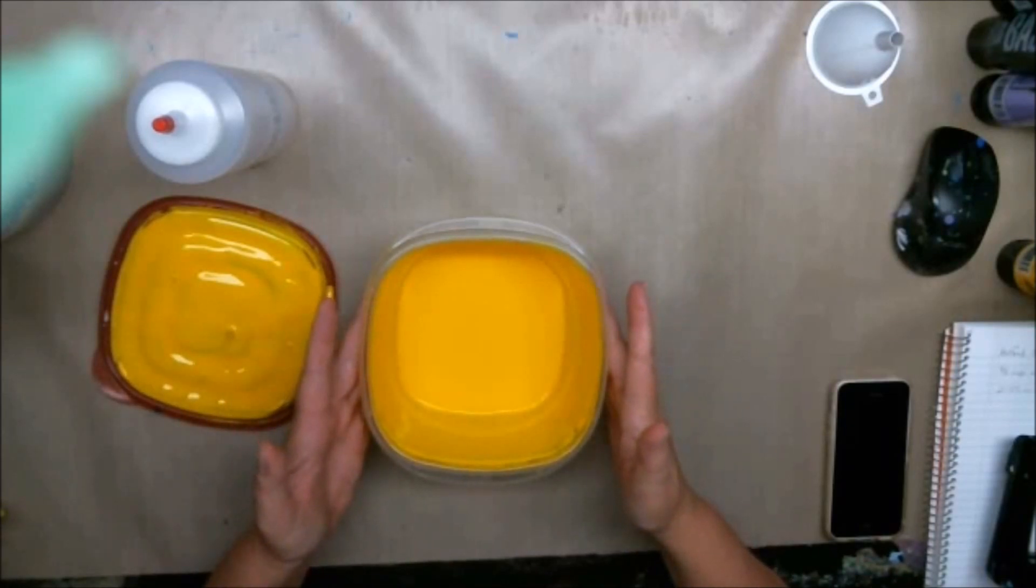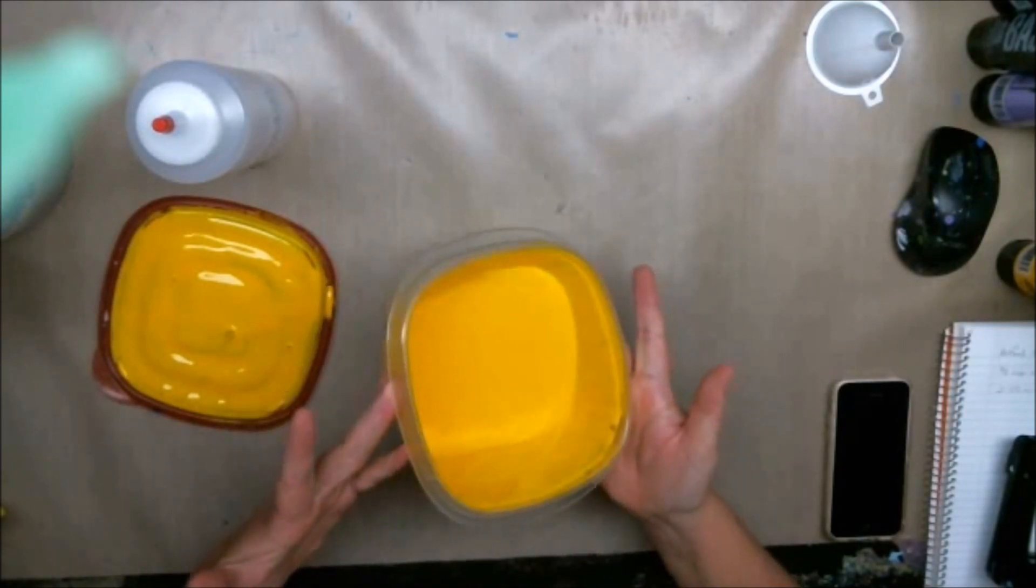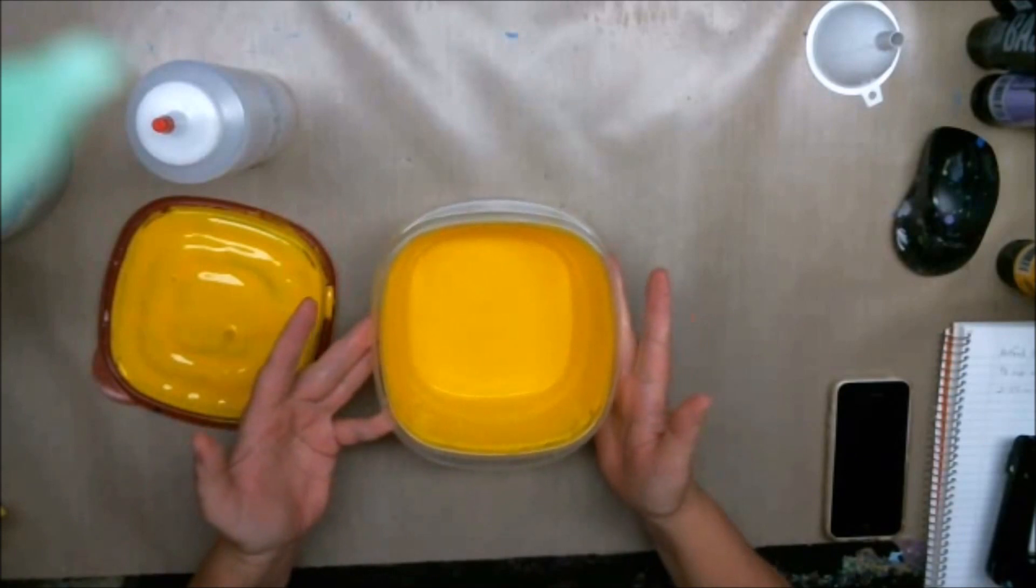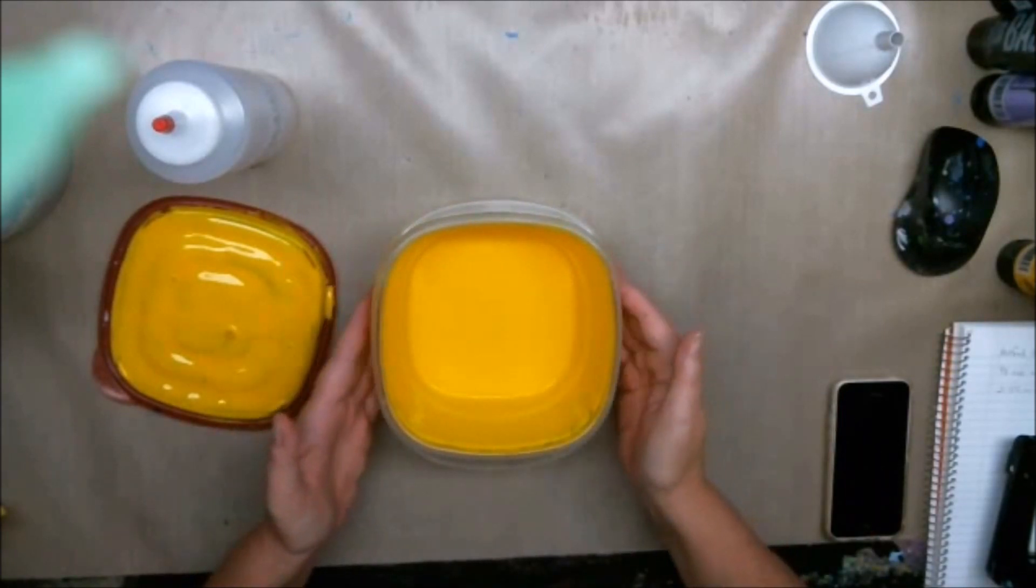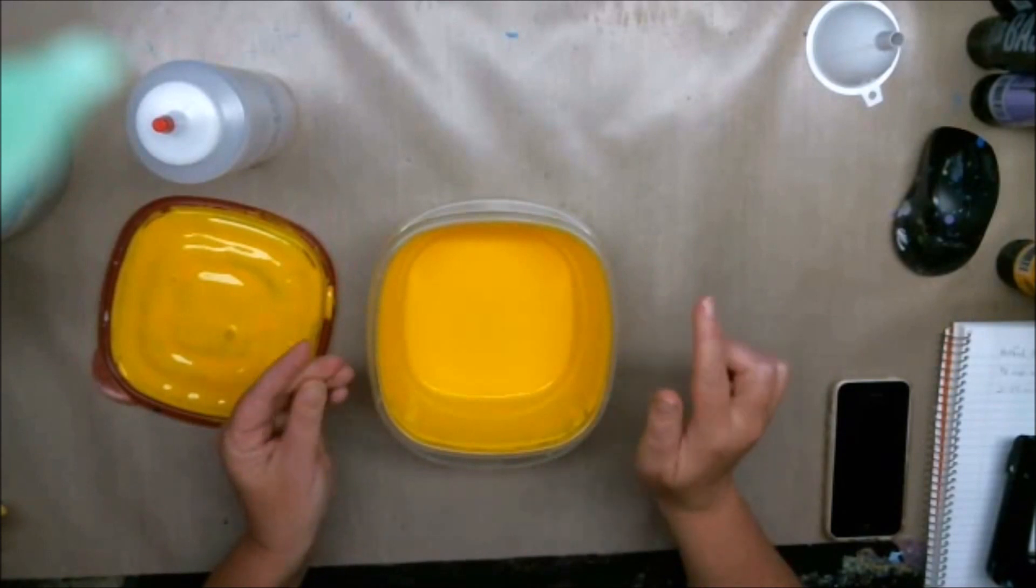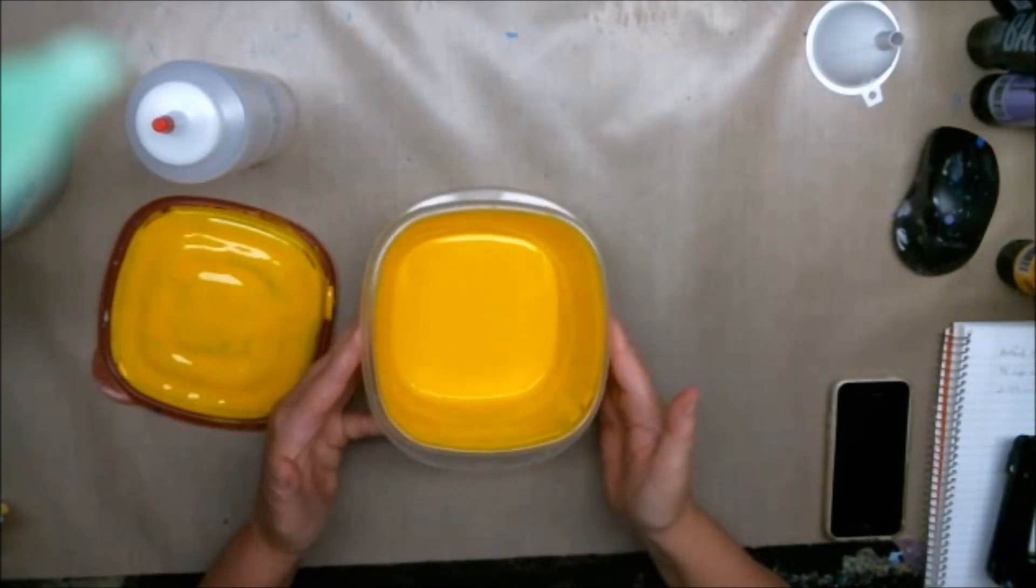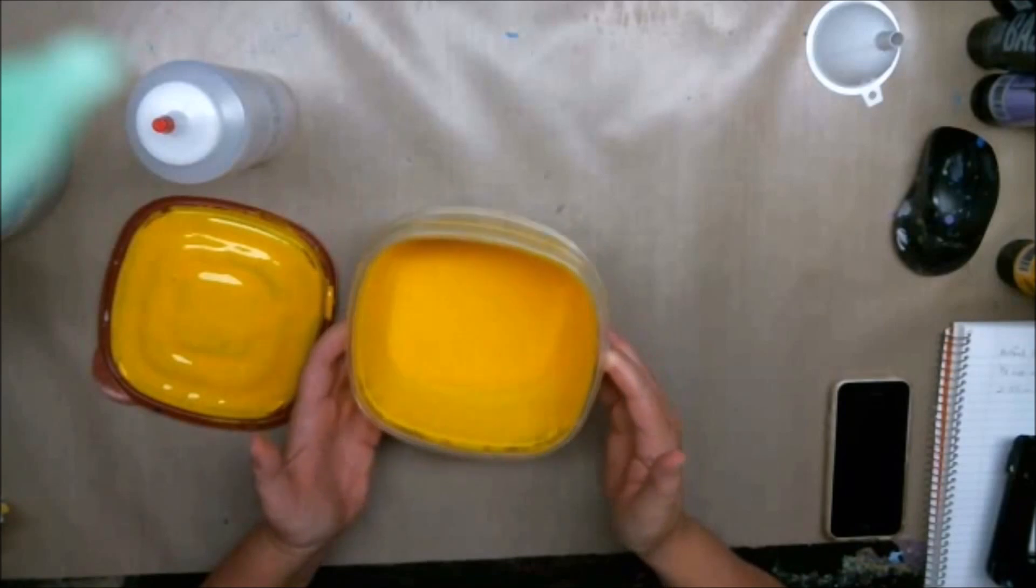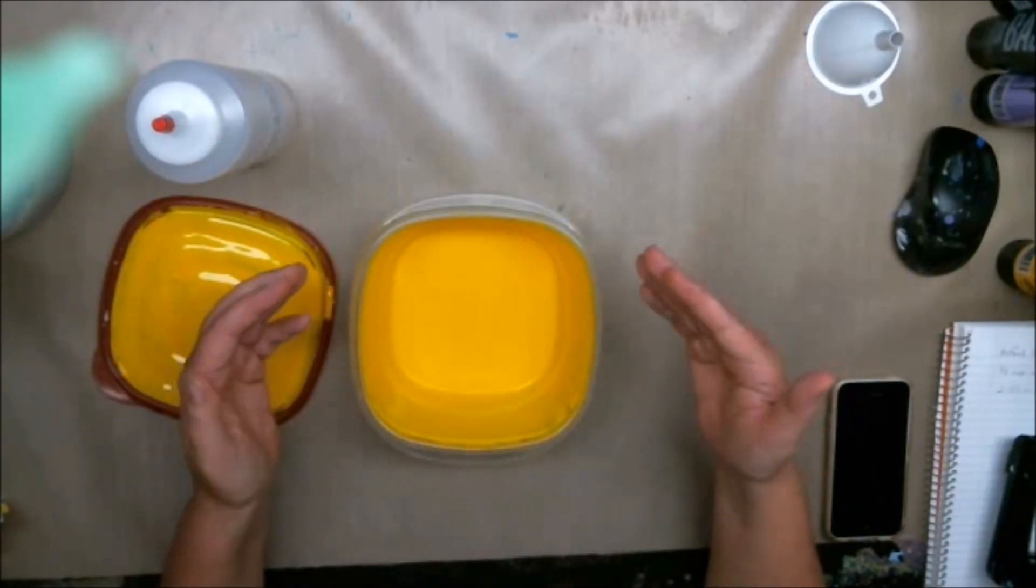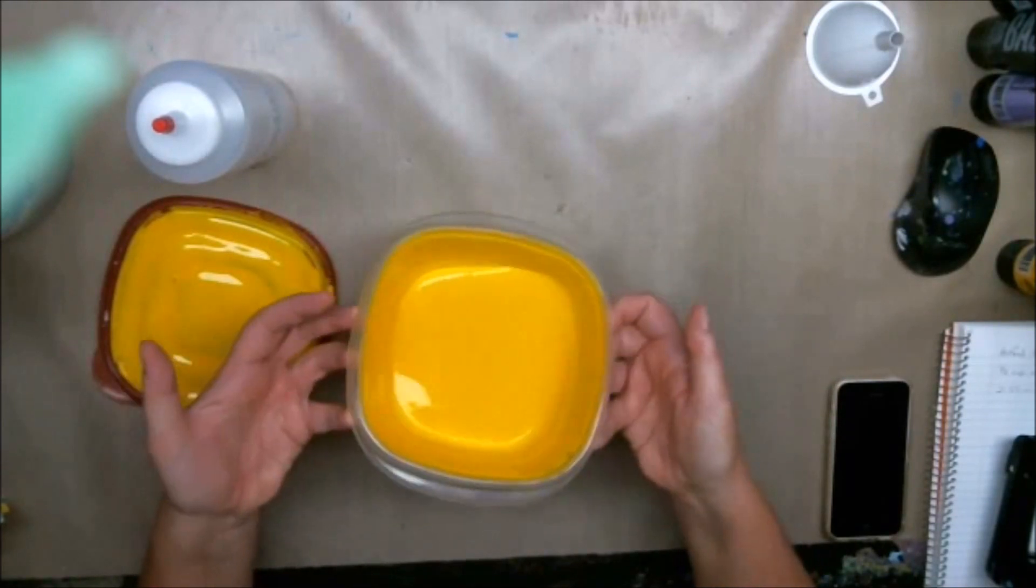But you might not like the 50/50. My mix is actually considerably thicker than what the guy in Australia uses. He has a much more fluid—he has more water in his, or the paint that he is using is thinner than the Basics. So you could create a 50/50 mix and say I don't like it, it's too thin or it's too thick, so then you have to keep adding or subtracting water until you get the consistency that you like.